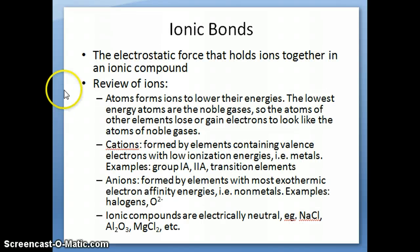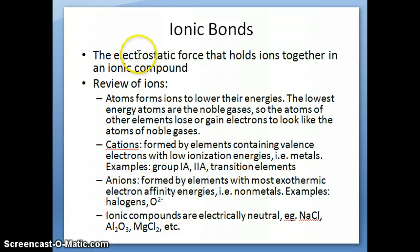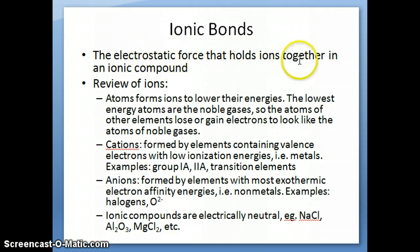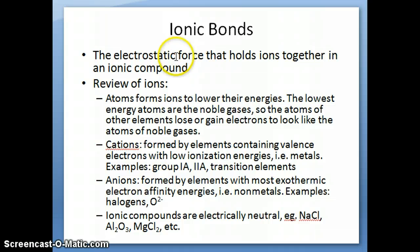An ionic bond is basically the term we use to represent the electrostatic force — the force that is between a cation and an anion. That's what we call the electrostatic force, and it holds these ions together in an ionic compound. The strength of that electrostatic force is what we're trying to quantify, and that's what we call the strength of the ionic bond.